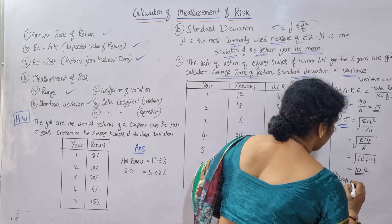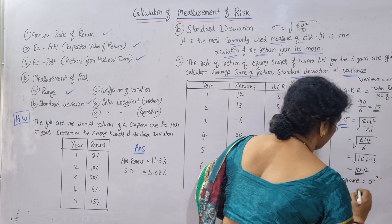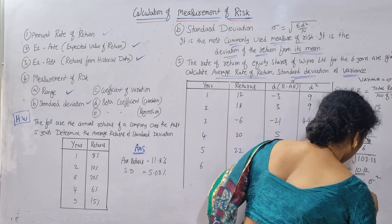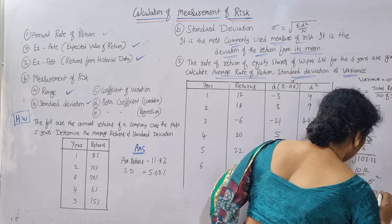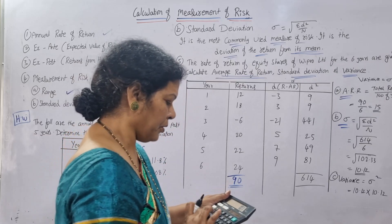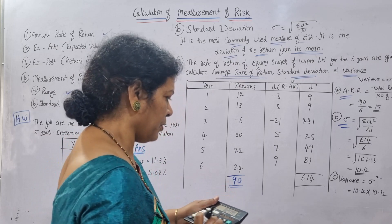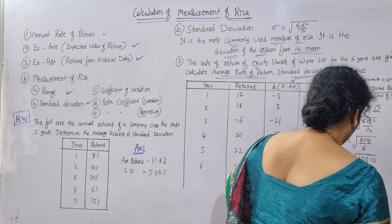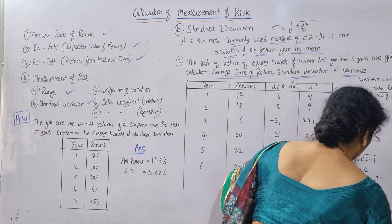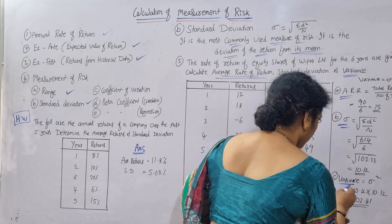Next, variance. Variance equals standard deviation squared. Standard deviation is 10.12, so 10.12 multiplied by 10.12 gives 102.41. So the variance is 102.41.